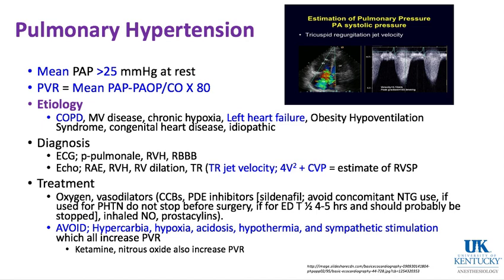Spinal anesthesia is probably not the greatest idea in someone with severe pulmonary hypertension because of the sudden drop in preload and afterload that can occur.